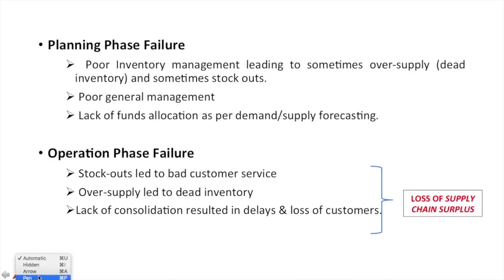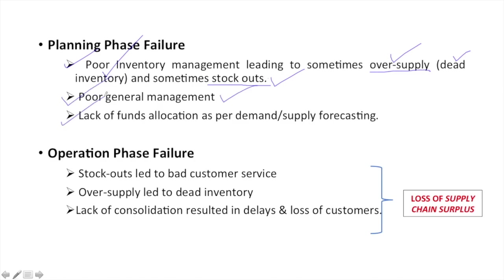In the planning phase, the company was maintaining its inventory so poorly that sometimes they were oversupplying and sometimes there were stockouts. Due to oversupply, there was dead inventory which no one purchased and it went to waste, increasing costs and decreasing the surplus. Due to stockouts, the company lost out on probable customers, which also decreased revenues. In general, the management was poor and they were not able to plan properly. There was lethargic forecasting of demand and supply, leading to improper fund allocation. In the operations phase, due to poor inventory management, there were stockouts and oversupply, with dead inventory leading to a loss of supply chain surplus.